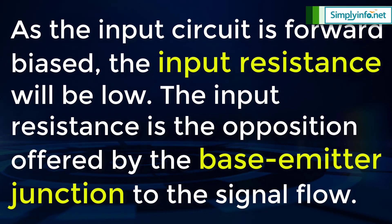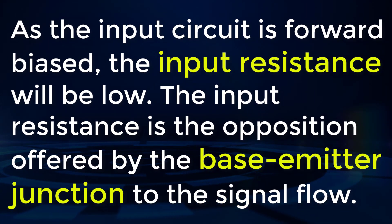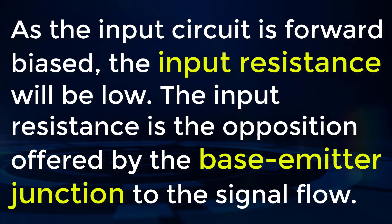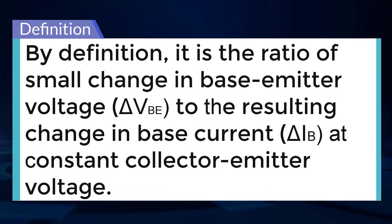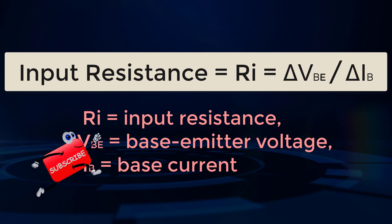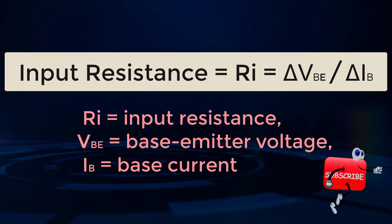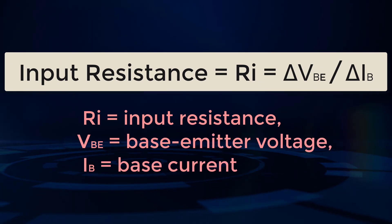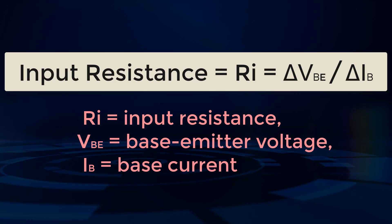Input resistance: As the input circuit is forward biased, the input resistance will be low. The input resistance is the opposition offered by the base-emitter junction to the signal flow. By definition, it is the ratio of small change in base-emitter voltage to the resulting change in the base current at constant collector-emitter voltage. Input resistance RI = ΔVBE / ΔIB, where RI is input resistance, VBE is base-emitter voltage, and IB is base current.